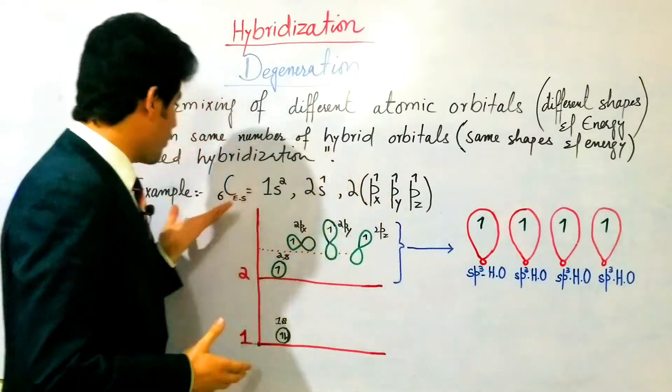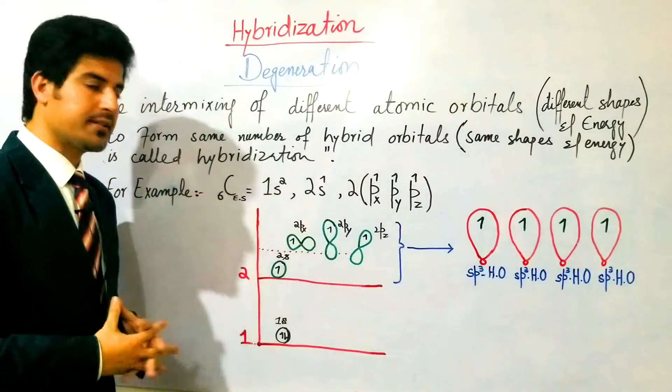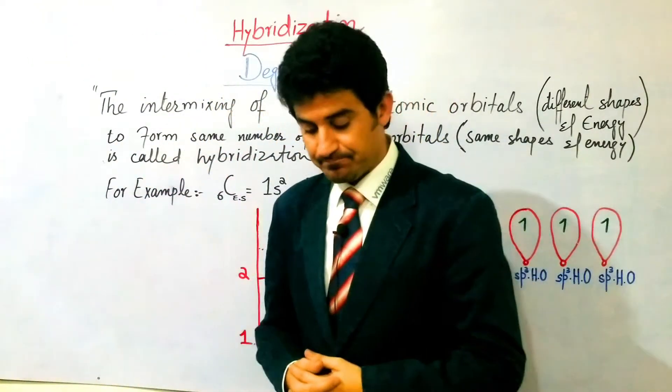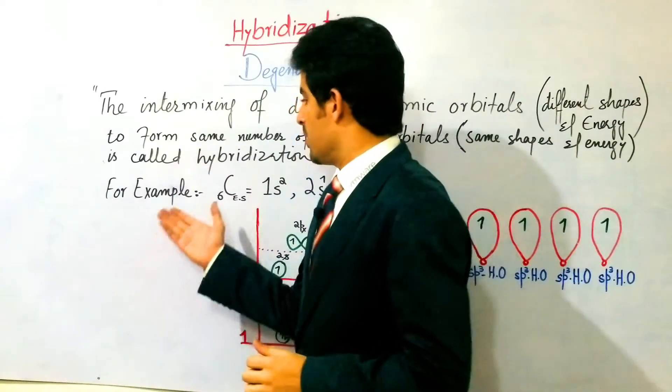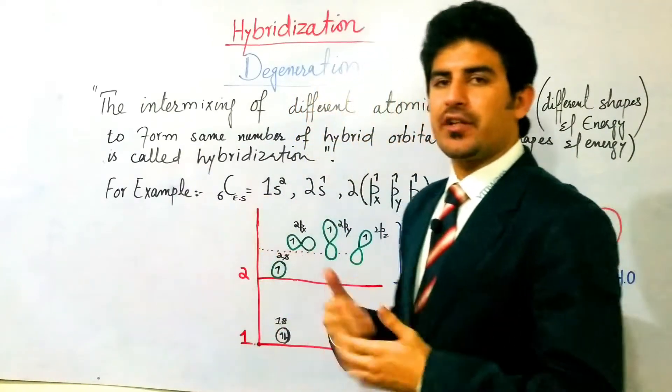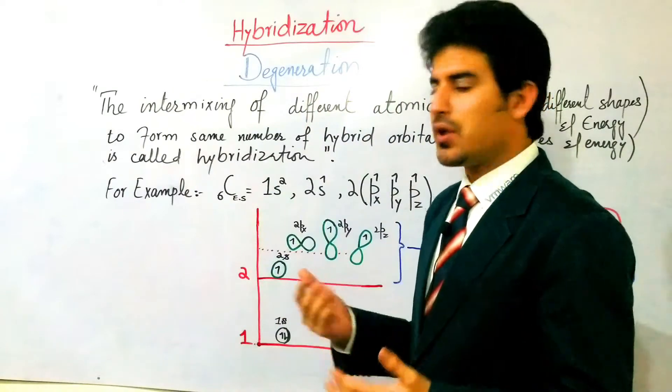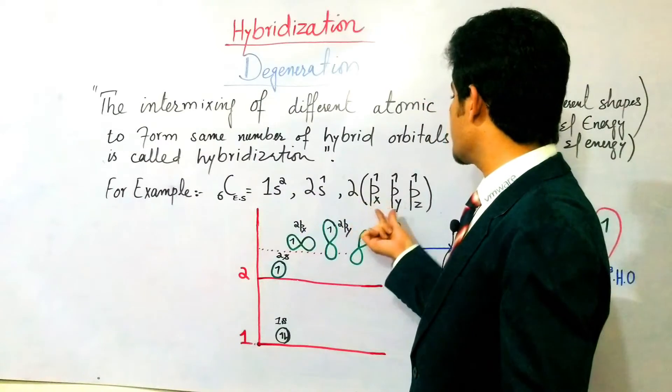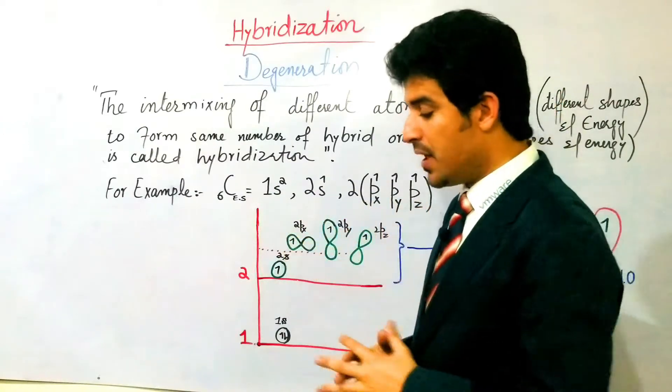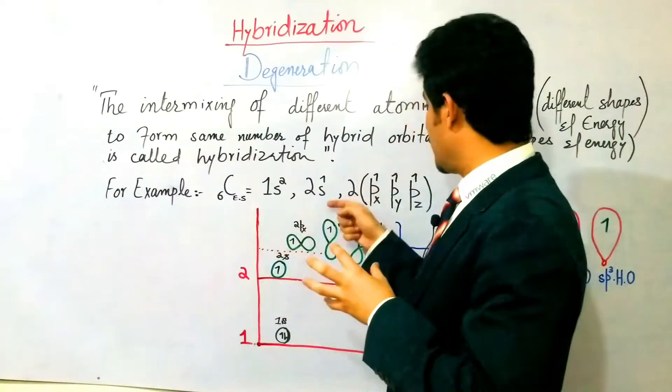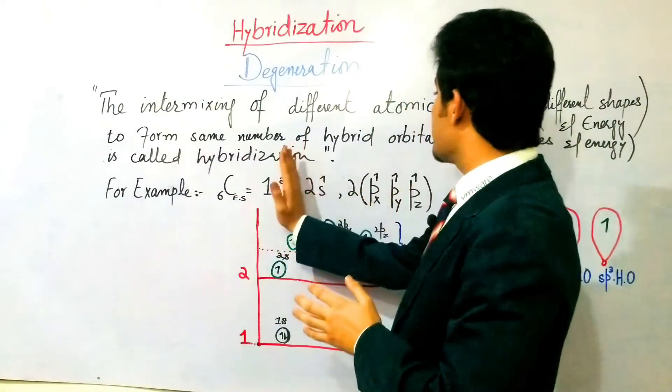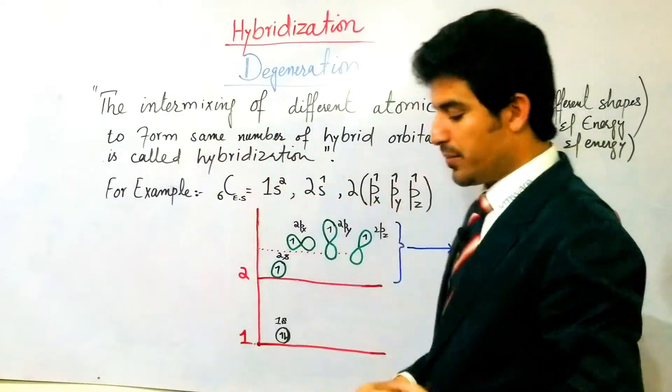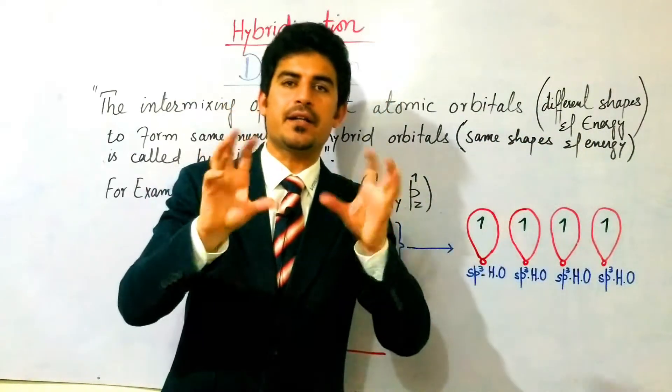Now let's go with an example. We take an example of carbon 6, atomic number 6. The electronic configuration according to the Aufbau principle at excited state is 1s², 2s¹, 2px¹, 2py¹, 2pz¹. This is the outer shell.